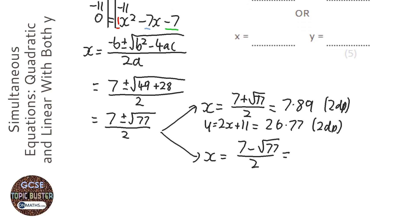OK, let's carry on. And then I'm going to type that in again, so 7, but this time minus root 77 over 2. And it gives me the decimal answer of minus 0.89. Again, to two decimal places, so minus 0.89.